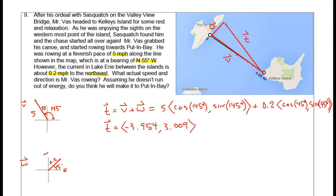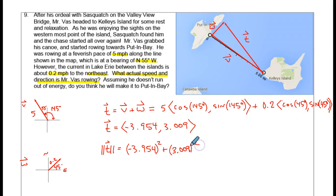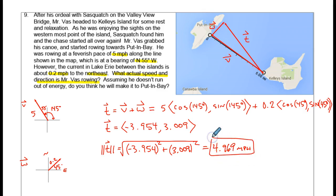That doesn't really help us — what we're asked to find is the actual speed and direction. The actual speed will be the magnitude of vector T. So we calculate the magnitude: negative 3.954 squared — remember when you square that it goes positive — plus 3.009 squared, then take the square root. You get a magnitude of 4.969 miles per hour. The current slows me down a little bit. If I'm paddling this way and the water is pushing me this way, I'm fighting into the current a little bit, so it is going to slow me down.